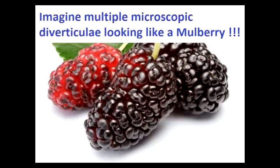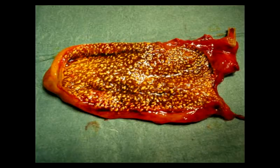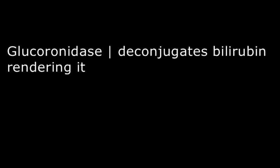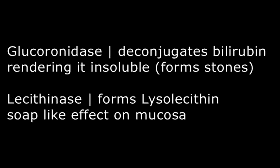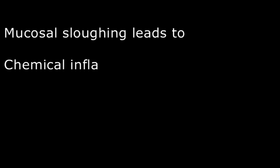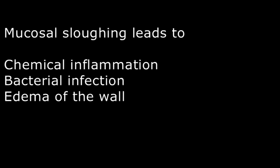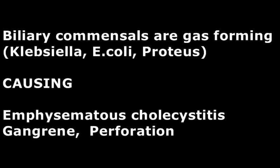Distension of the gallbladder leads to diverticula being formed, called Aschoff-Rokitansky sinuses. These sinuses may accumulate cholesterol crystals and fat globules, leading to strawberry gallbladder. These sinuses harbor bacteria that secrete glucuronidase, unconjugating the bilirubin, and phospholipase which acts on lecithin. Lecithin is an important phospholipid which is converted to lysolecithin, having a soap-like effect directly on the mucosa causing it to slough off. Chemical inflammation followed by bacterial infection of the gallbladder leads to gangrene, empyema, emphysema, and perforation.